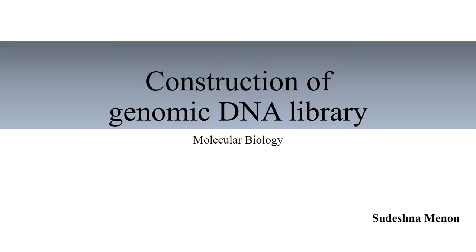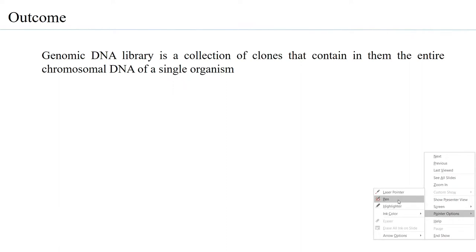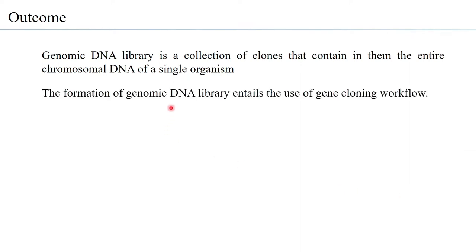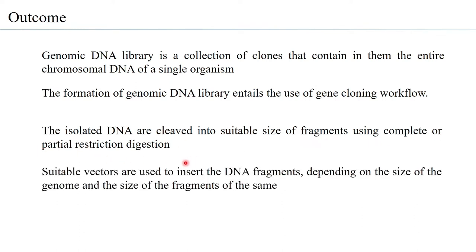Let us look at the learning outcomes of this session. A genomic DNA library is a collection of clones that contains the entire chromosomal DNA of a single organism. Formation of the genomic DNA library entails the use of a gene cloning workflow. The isolated DNA are cleaved into suitable size fragments using complete or partial restriction digestion, and then suitable vectors are used to insert the DNA fragments depending on the size of the genome and the size of the fragments obtained.